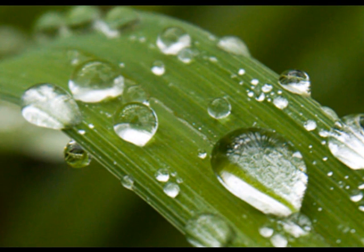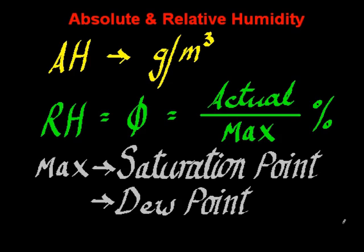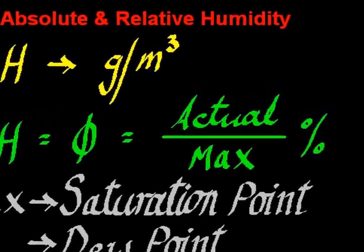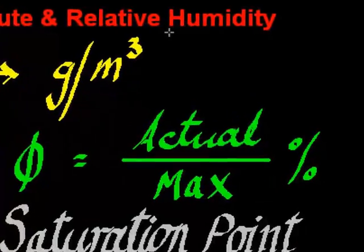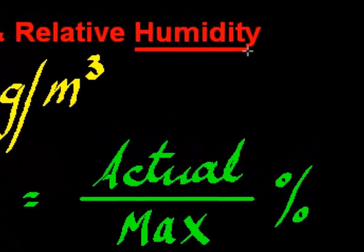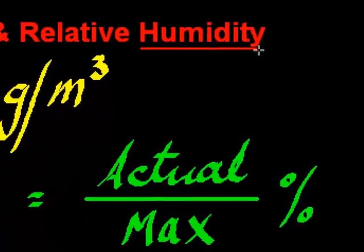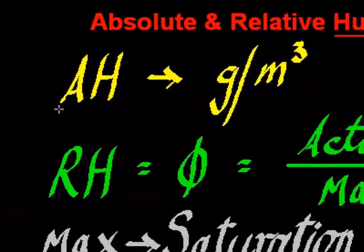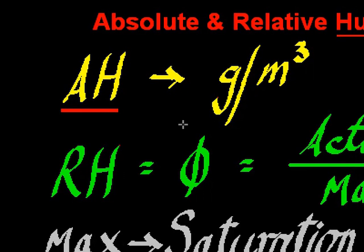Hi there guys. Today's talk is about the relationship between absolute humidity and relative humidity. Humidity is a measure of how much water there is in the atmosphere. Absolute humidity is the weight of water in the atmosphere compared with the volume, and it's usually measured in grams per cubic meter.